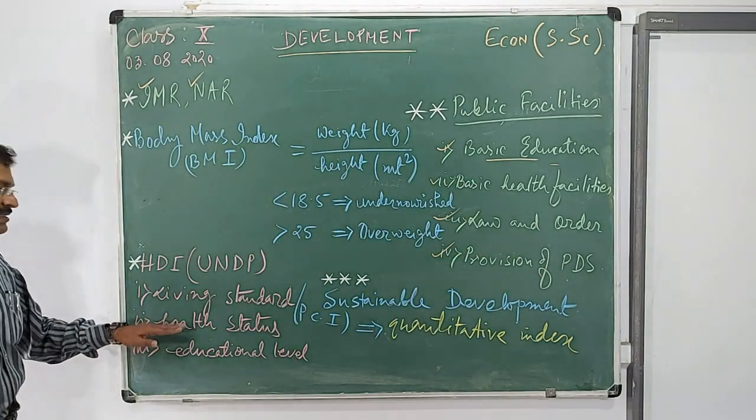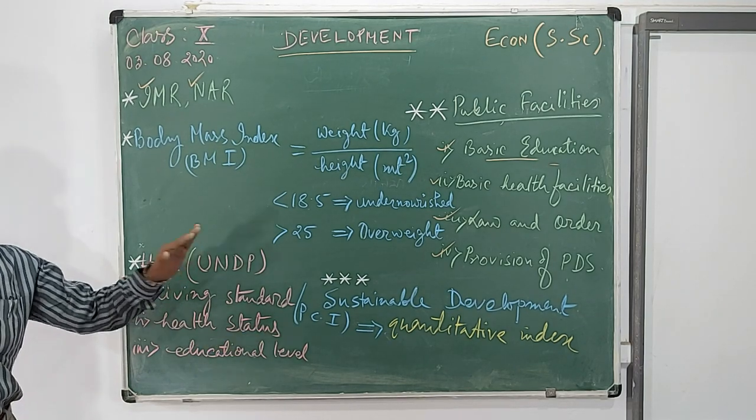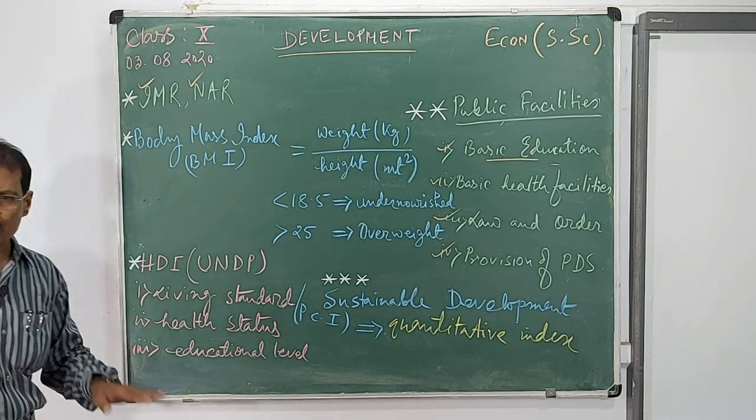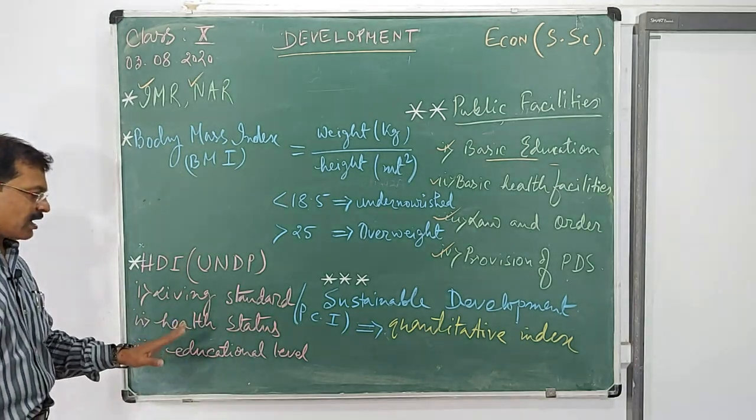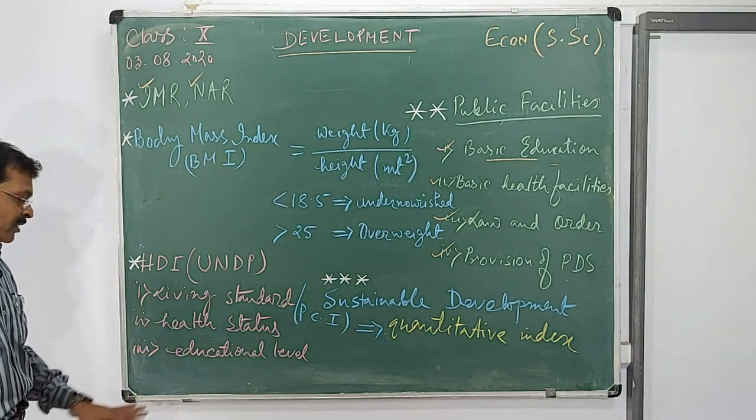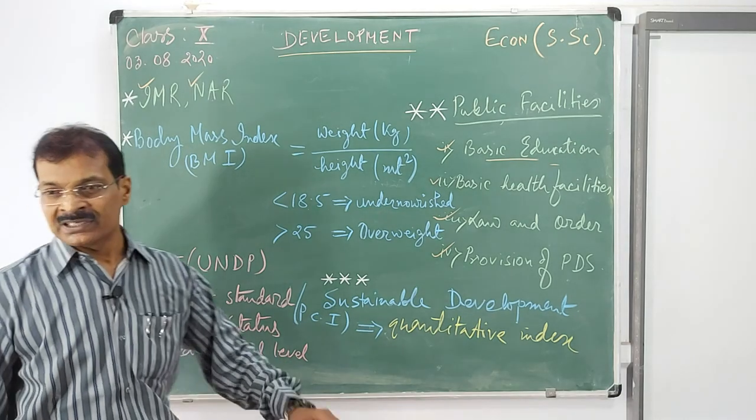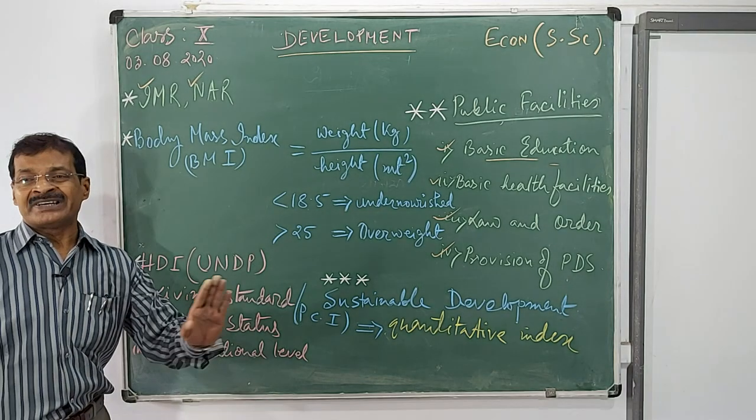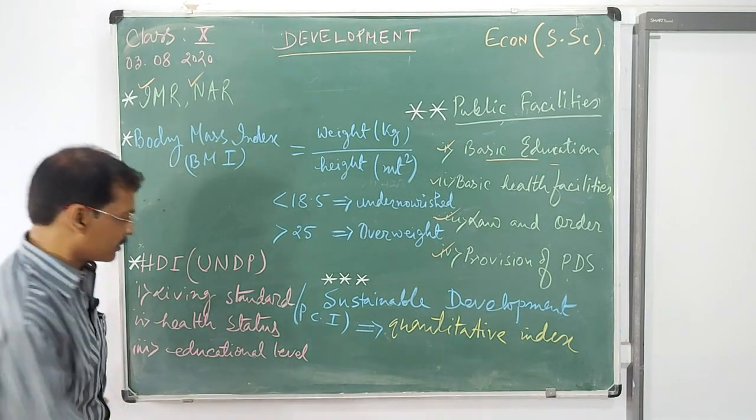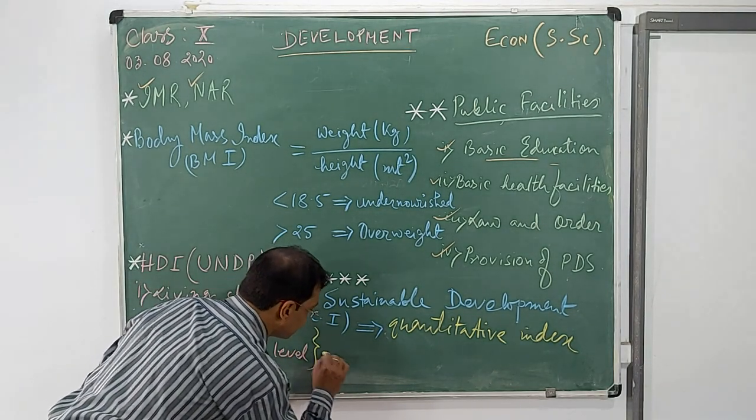Second is health status: life expectancy at birth, infant mortality rate, mortality rate, fertility rate, etc. These all are health status and educational level.